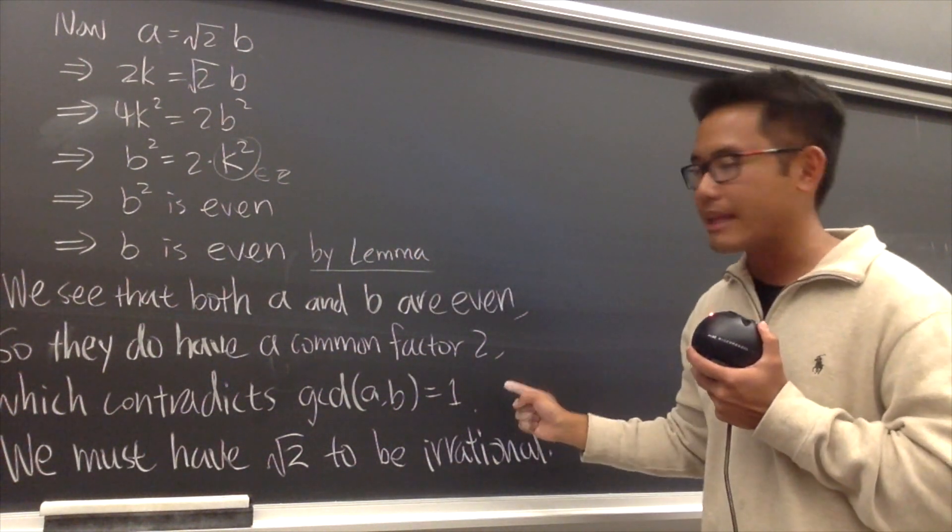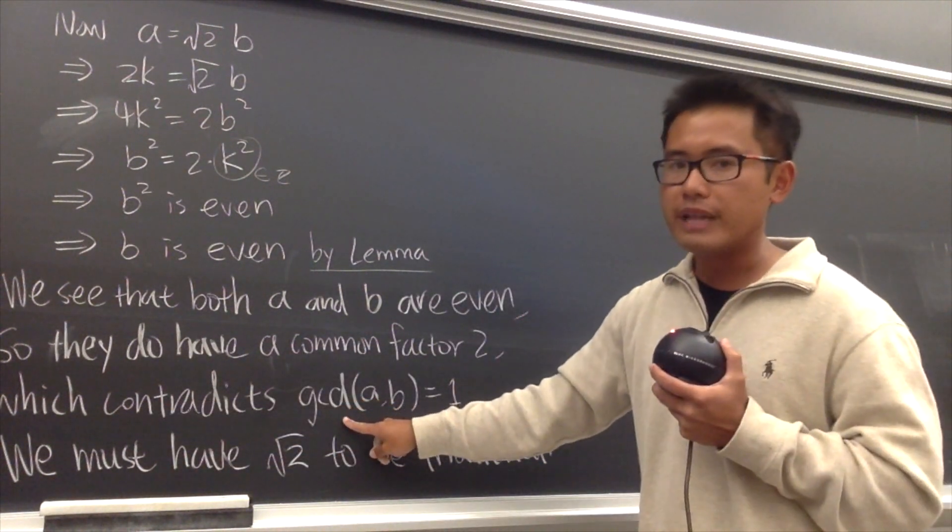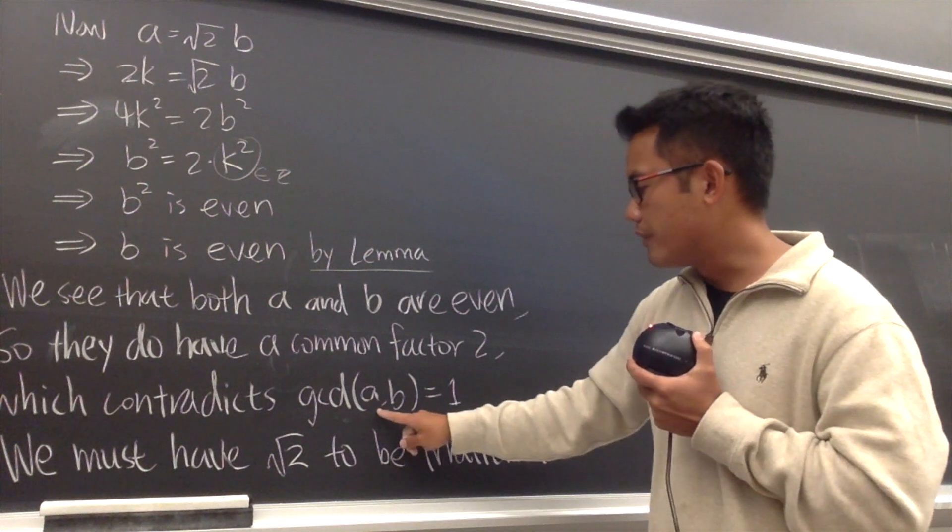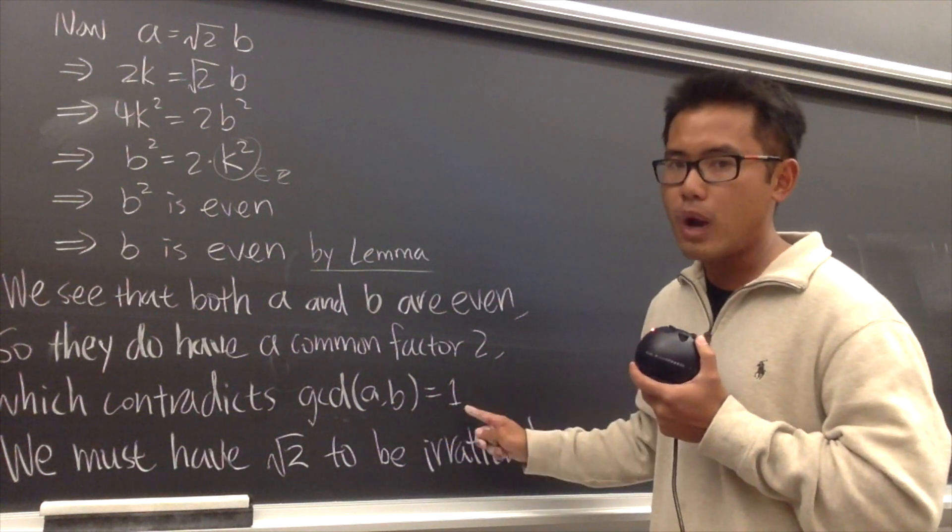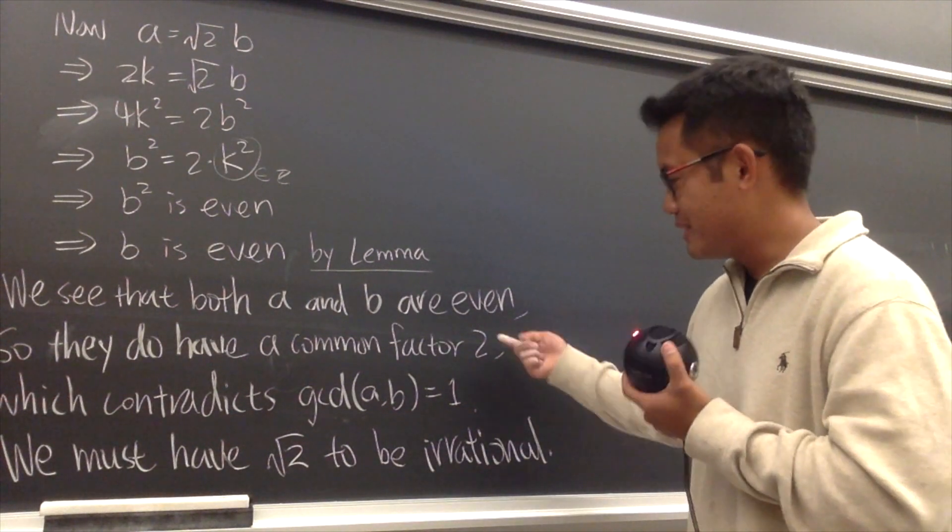And see, this is bad, because this contradicts our earlier assumption that the greatest common divisor of a and b was equal to 1. Now you're saying it has 2, so this is no good. This is a disagreement.